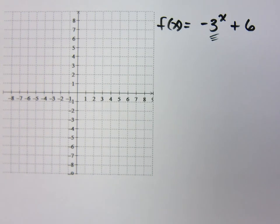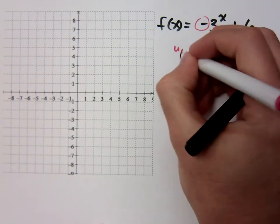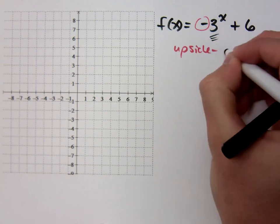Now, what can you tell me about this graph? What do you mean it's going to be flipped? So this guy's actually going to be upside down.